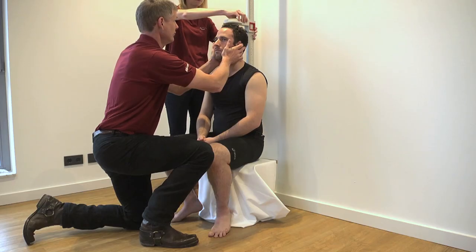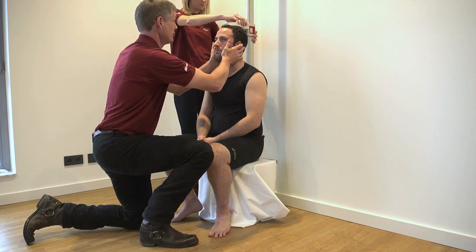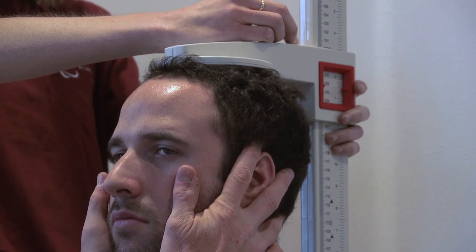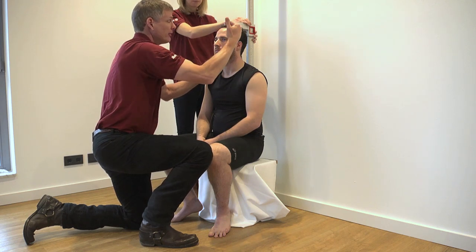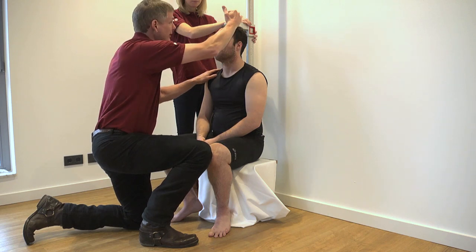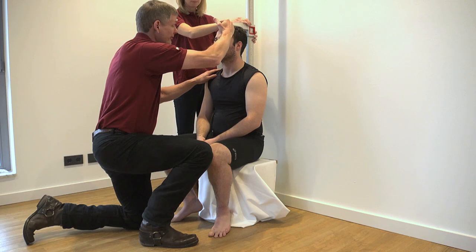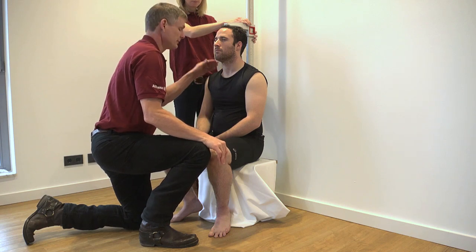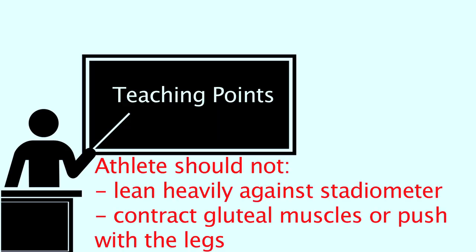To take the measurement, the athlete is instructed to take and hold a deep breath and, while keeping the head in the Frankfurt plane, the measurer applies gentle upward lift through the mastoid processes. The recorder places the measuring arm of the stadiometer firmly down on the vertex, crushing the hair as much as possible. The recorder then holds the arm in place while the athlete exhales and slightly moves away and the measure is taken. The sitting height is calculated by subtracting the height of the sitting platform from the measurement obtained. Teaching points: if the stadiometer is freestanding, make sure the athlete does not lean too heavily against it. Care must be taken to ensure the athlete does not contract the gluteal muscles or push with the legs. Big hair can lead to invalid measurements and the athlete should flatten hair as much as possible.